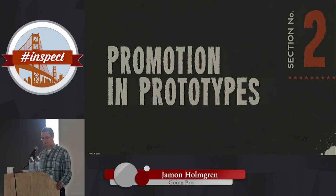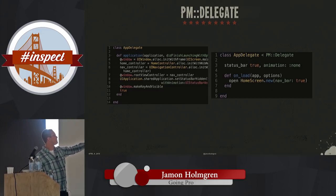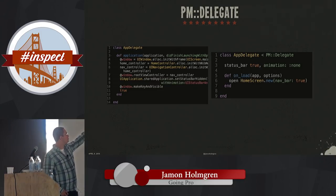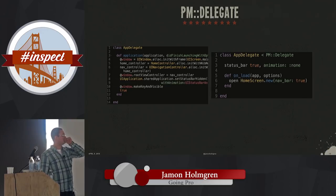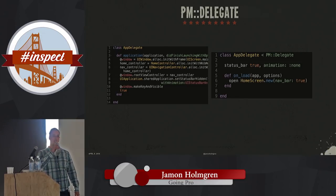What does ProMotion give you? First, ProMotion gives you the ProMotion delegate. Instead of a class AppDelegate where you write 'application did finish launching with options,' create a window, create a home controller, a nav controller — ProMotion wraps all of that. You inherit from PM Delegate, set status bar true with animation colon none — very expressive. Then you have a small on-load method, open your first screen, give it a navigation bar. That's your delegate.